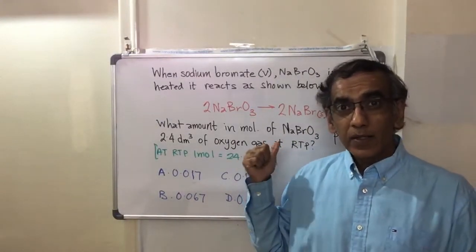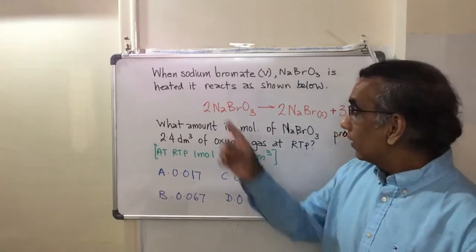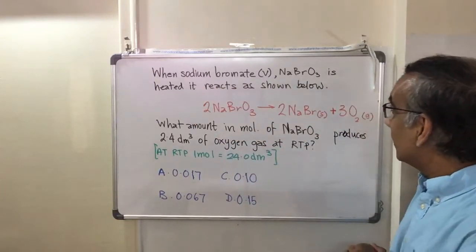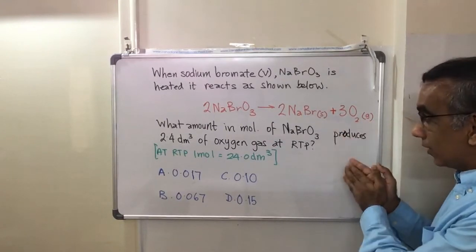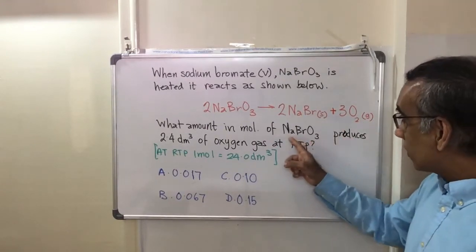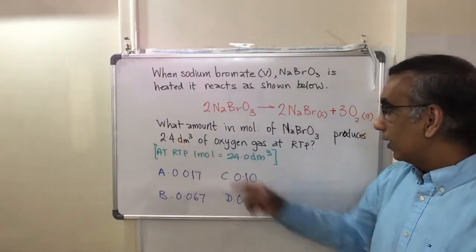Hello and welcome. Today we look at this question made for IB chemistry. When sodium bromate is heated, it reacts as shown in this equation. What amount in moles of sodium bromate produces 2.4 dm cubed?